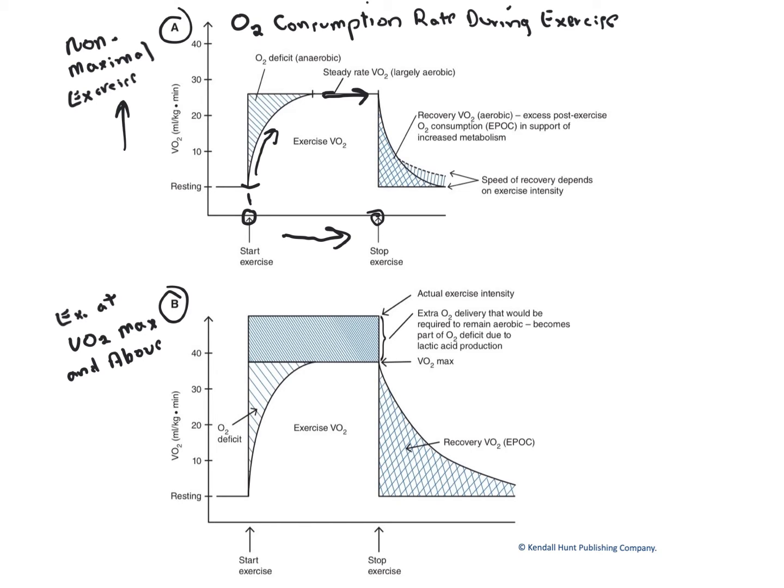But before that occurs, we develop an oxygen deficit. That's this area. And what that represents is a situation in which the now-active muscle cells, because they haven't had enough time yet to produce ATP aerobically, must resort to anaerobic means to satisfy their energy requirements.